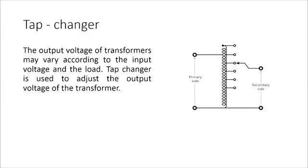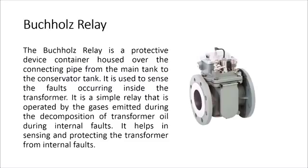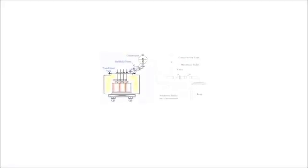The output voltage of transformers may vary according to the input voltage and the load; the tap changer is used to adjust the output voltage of the transformer. The Buchholz relay is a protective device housed over the connecting pipe from the main tank to the conservator tank. It is used to sense faults occurring inside the transformer. It is a simple relay operated by the gases emitted during the decomposition of transformer oil during internal faults, helping to sense and protect the transformer from internal faults.